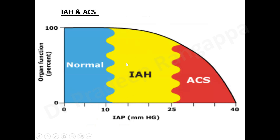Pictorially, 0 to 10 mmHg is normal; above 12 is the amber region where one needs to exercise caution. This is the phase where one should intervene to reduce intra-abdominal pressure so it does not lead to abdominal compartment syndrome, because once organ dysfunction sets in, morbidity and mortality significantly increase.